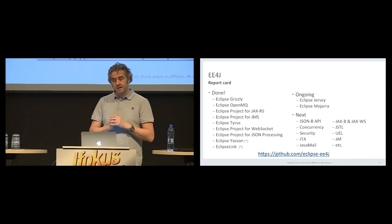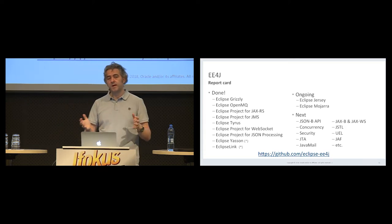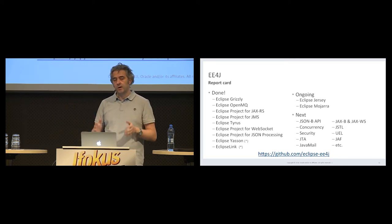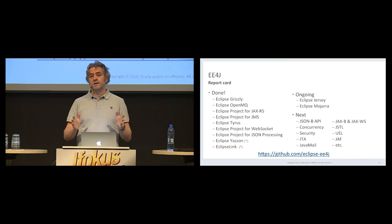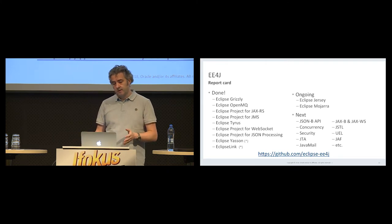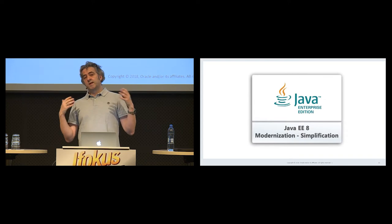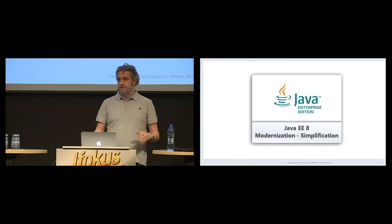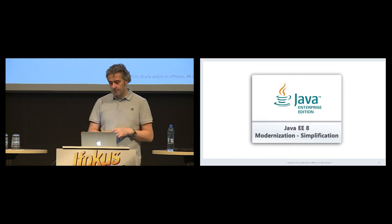That's basically where we are on the EE4J front. The key thing is that we are putting everything in place so that the platform can evolve in a vendor-neutral way and at a more rapid pace. The key aspect from a technology point of view is that EE4J will start from Java EE8, so next I'll give you a quick sneak peek at what's inside Java EE8 — that's basically EE4J 1.0.